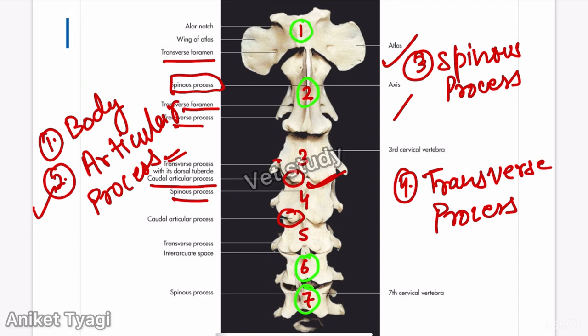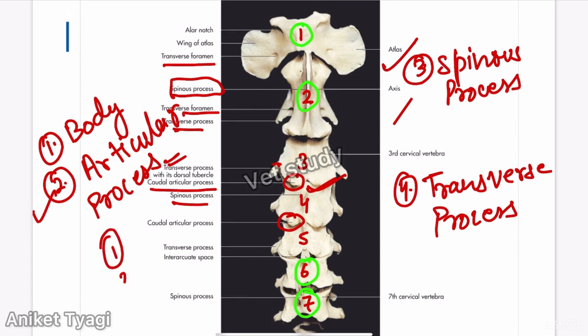The foramen transversarium gives passage to three things: first, the vertebral artery; second, the satellite vein; and third, the satellite nerve. These are the typical cervical vertebrae.